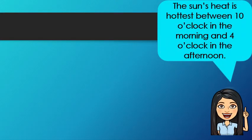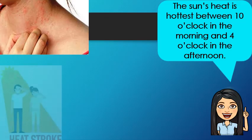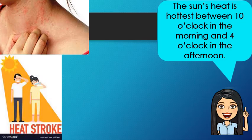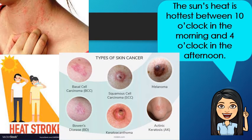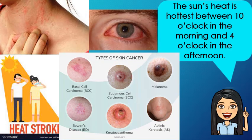The sun's heat is hottest between 10 o'clock in the morning and 4 o'clock in the afternoon. Overexposure to the sun's rays can cause sunburn, skin rashes, headaches, and stroke. The sun's rays can damage the skin and can cause skin cancer. It can also damage your eyes. Protect them from the sun.